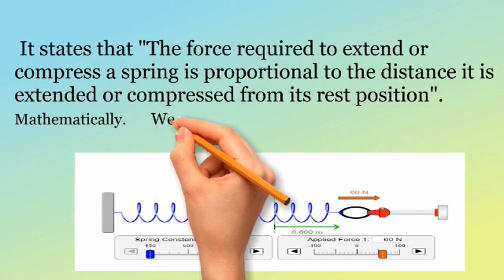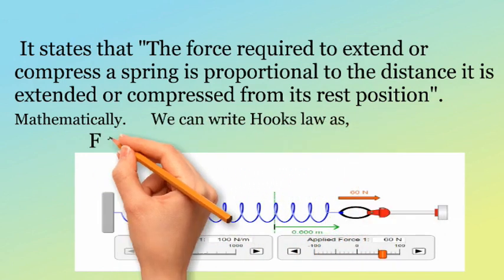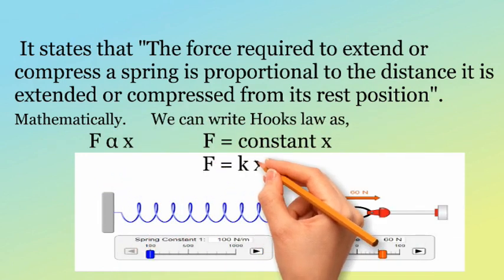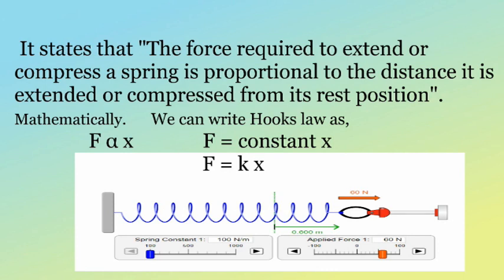Mathematically, we can write Hooke's Law as f is directly proportional to x, f equals constant x, f equals kx.